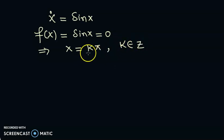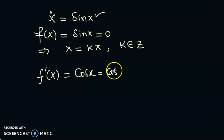So these all are going to be the equilibrium points of this dynamical system. Then we can find out its derivative, which is going to be cos x. In fact, we can calculate this derivative at k pi.